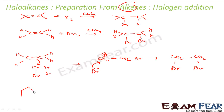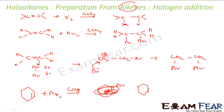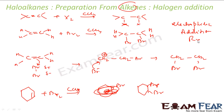Similarly, we can have one more reaction similar to this. I have cyclohexene; if I add Br2 in presence of CCl4, you get 1,2-dibromocyclohexane. This is also an example of electrophilic addition, because the first thing that is getting reacted is Br+. So it is an electrophilic addition reaction.